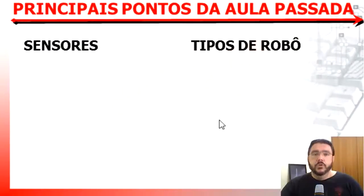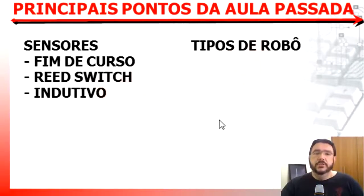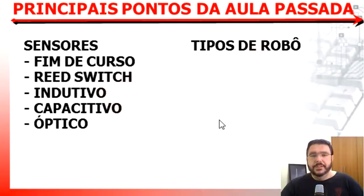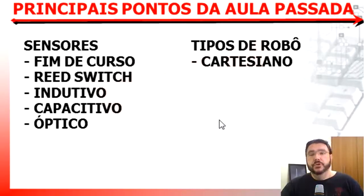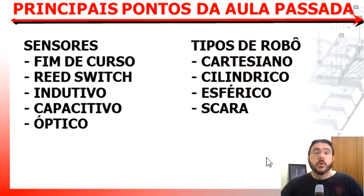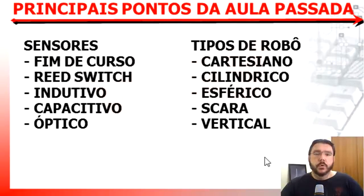Na aula passada vimos os sensores de fim de curso, o reed switch, o sensor indutivo, o sensor capacitivo e os sensores óticos. Também falamos sobre os tipos de robô: cartesiano, cilíndrico, esférico, escara, modelo especial do esférico e o robô vertical. Hoje daremos a sequência no nosso conteúdo para fecharmos com chave de ouro a parte de robótica industrial.